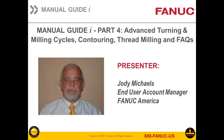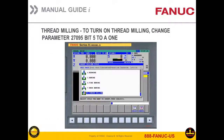Thanks, Mark. Today we're doing Part 4 of our series on Manual Guide I, covering some of the more advanced cycles. The first thing we want to cover is thread milling. This is something relatively new in Manual Guide I, and it might not be enabled when you purchase a new machine. It's typically in the hole machining cycles within Manual Guide I, but a lot of machines come from builders with it not turned on.